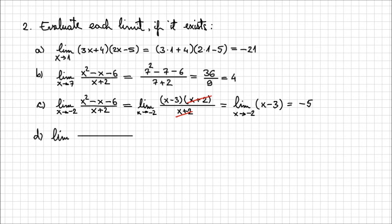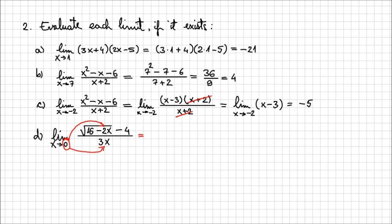For point D, let's evaluate the limit of the square root of 16 minus 2x, minus 4, over 3x when x approaches 0. Plugging in 0: the denominator is 3 times 0, and the numerator gives square root of 16 minus 4, which is 4 minus 4 equals 0. So again we have the special indeterminate form 0 over 0, which we have to work around.